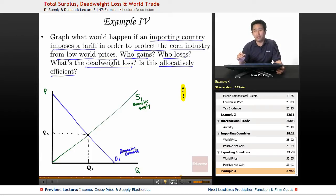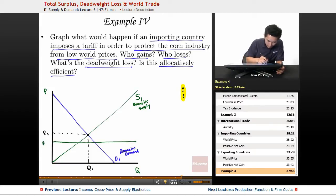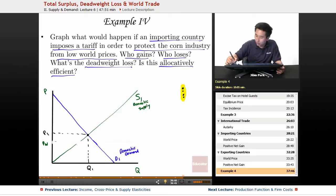Now remember, if it's an importing country, the world price is going to be below the equilibrium price. So let's draw the world price below. So call this PW here. So graph what would happen if the importing country imposes a tariff in order to protect the corn industry from low world prices. So when the government imposes a tariff, what's going to happen here? Actually, what I'm going to do is I'm going to just so that there's actually enough space here, I'm going to draw the PW a little bit lower just so that I give myself a little bit more space here.